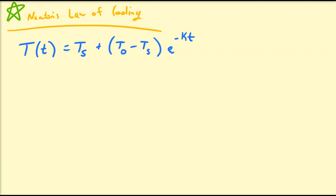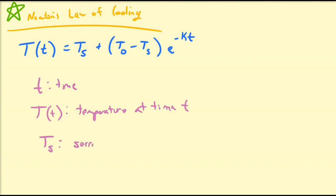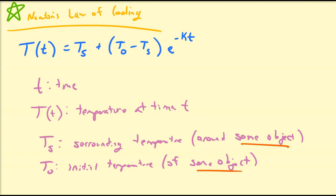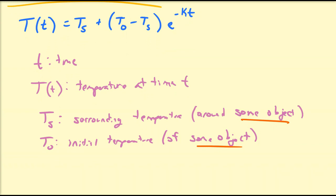Let's begin by discussing what each of these individual variables represents. Little t is going to represent time. Capital T of t is going to represent temperature at time little t. T sub s is going to represent the surrounding temperature around the object. T sub 0 is going to represent the initial temperature of some object. And e is just the natural log base, 2.7182 and so on. And then the last thing we have is this little k — that's going to be a rate parameter.